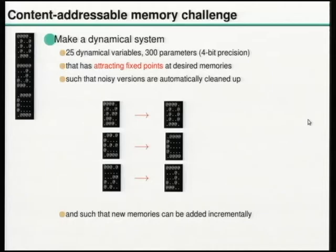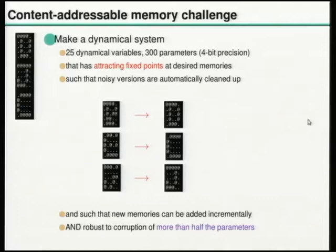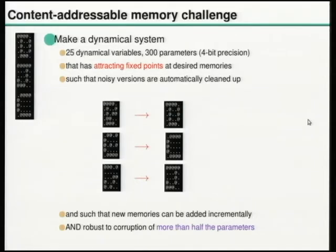In addition to being able to add extra memories incrementally with small changes, we'd like the property that the dynamical system can suffer brain damage and still work pretty well. A nasty person should be able to randomly delete half of the learned parameters, and the dynamics should still have attracting fixed points roughly at the original memories.